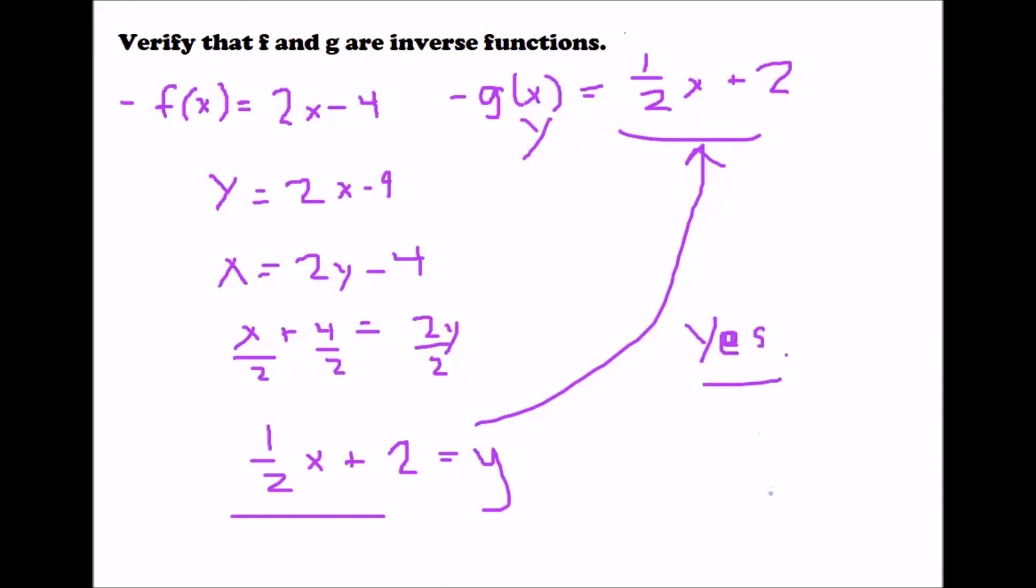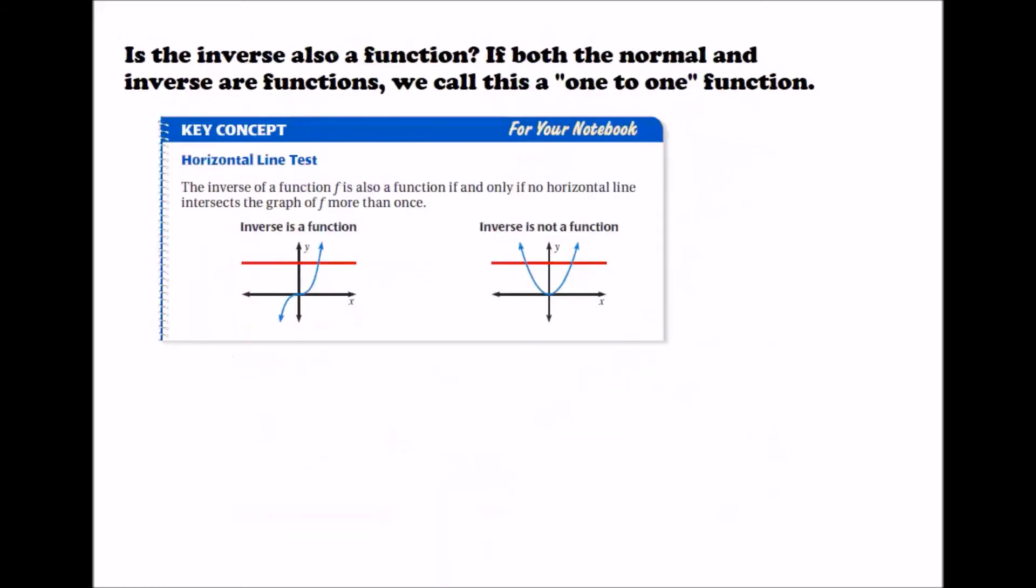They are inverses, they are inverse functions of each other. The last thing you need to know is they will ask you questions like is the inverse also a function. And you need to know if both the normal function and the inverse are functions, we call this a one-to-one function. That is, if both normal is a function and the inverse is a function.